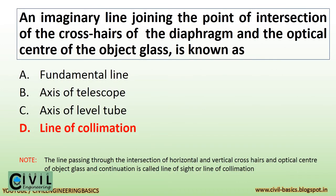An imaginary line joining the point of intersection of the crosshairs of the diaphragm and the optical center of the object glass is known as the line of collimation. The line passing through the intersection of horizontal and vertical crosshairs and the optical center of the object glass and its continuation is called the line of sight or line of collimation.